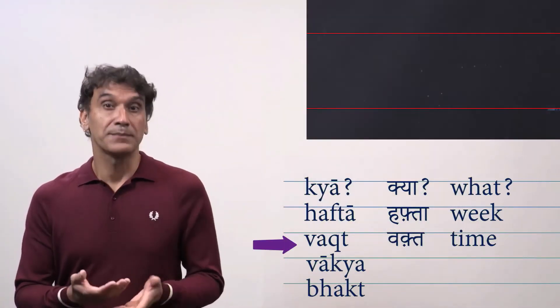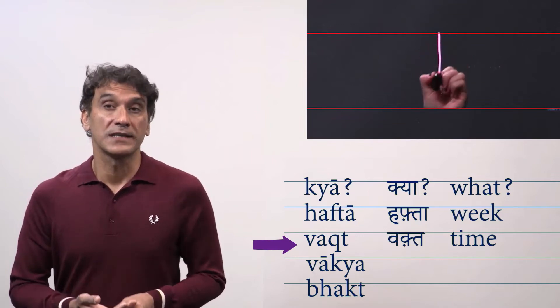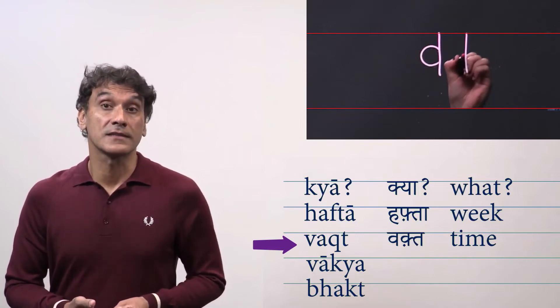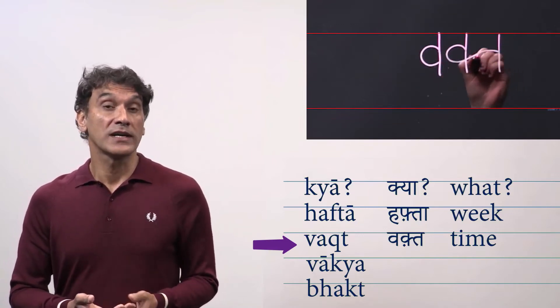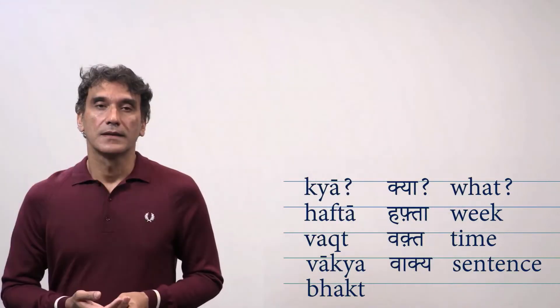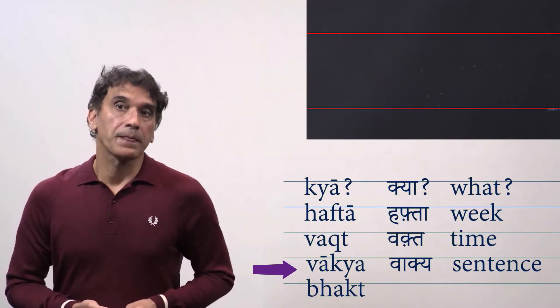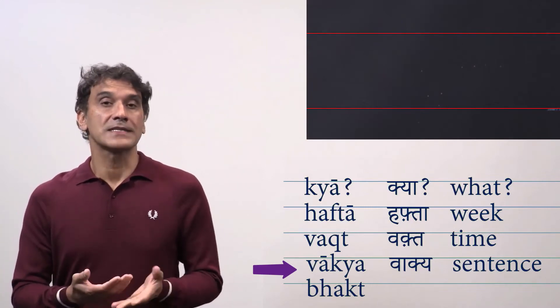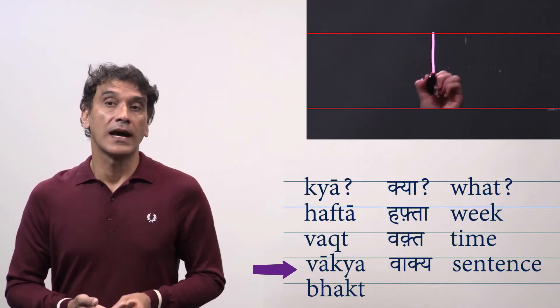The next word is vaqt. That means time. The first syllable is va. Then the consonant cluster qta. That means you write half qa and attach it to ta. So vaqt. The next word is vakya. That means sentence. The first letter v has the long vowel a. Va.